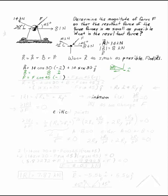Vector A is 14 cosine 30 in the negative i direction, plus 14 sine 30 in the positive j direction. Your triangle looks like this, where this angle is 30 degrees and that is the negative i direction — make sure you're being careful with your signs. Vector B is easy: that's just 8 in the positive i direction. Vector F is F cosine 45 in the negative i direction, and F sine 45 in the negative j direction. This is down and to the left, so both components have to be negative.